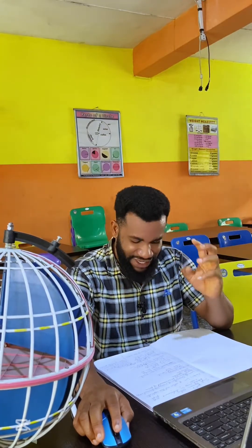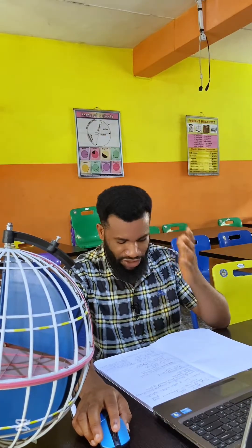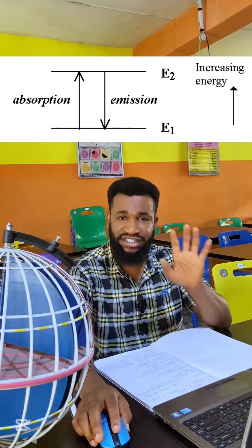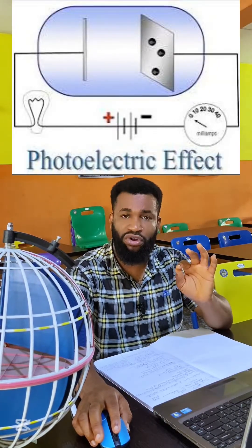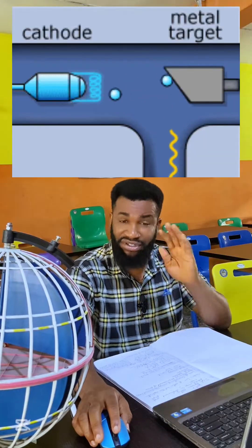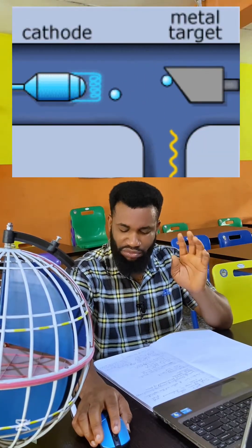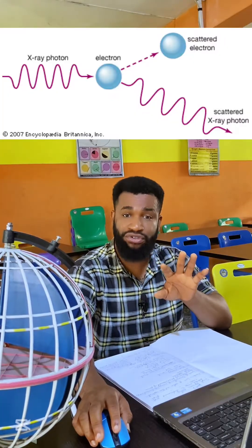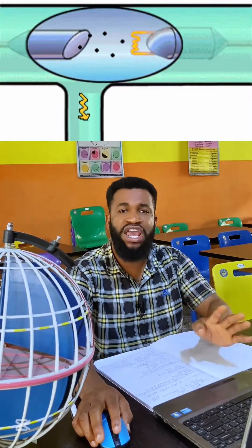The seventh and last topic is atomic and nuclear physics. Under this you have models of the atom, energy quantization, the photoelectric effect, thermionic emission, X-rays, and the structure of the nucleus. You also cover radioactivity, nuclear reactions including fission and fusion, and the wave-particle paradox, which falls under the Heisenberg uncertainty principle. These are exactly what comes out in the Part 2 exam.